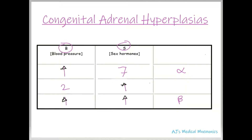In 17α, blood pressure will be increased. In 21, sex hormones are increased. And in 11β, both blood pressure and sex hormones will be increased.